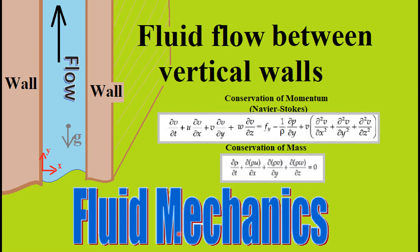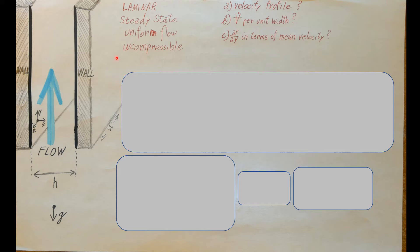Let's take a look at this fluid mechanics problem. We'll use the conservation laws to figure out this vertical flow between two parallel walls. We're considering a viscous incompressible flow between two infinite vertical parallel walls with incompressible and constant properties. The distance between the plates is h, gravity points downward, and the axes are set up at the first wall with x pointing horizontal and y vertical. We need to calculate the velocity profile, the volume flow rate per unit width, and an expression for the pressure gradient in terms of mean velocity.